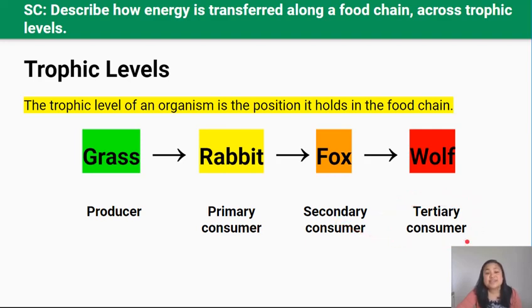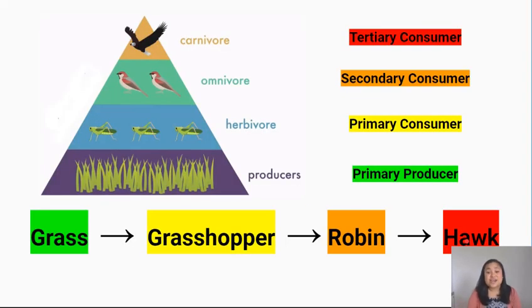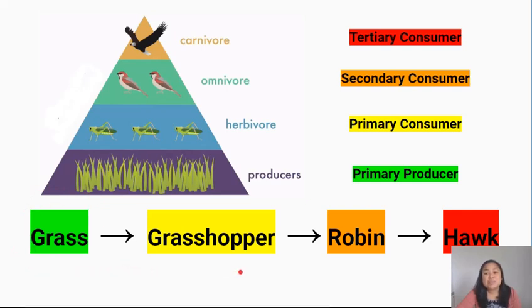The tertiary consumer is at the top of this food chain. Let's look at another food chain: grasshopper eats grass, robin — which is a bird — eats grasshopper, and hawk — a larger predatory bird — eats robin. In this chain, grass is the primary producer at the bottom. The grasshopper is the primary consumer, the robin is the secondary consumer, and the hawk is the tertiary consumer at the top of the food chain.